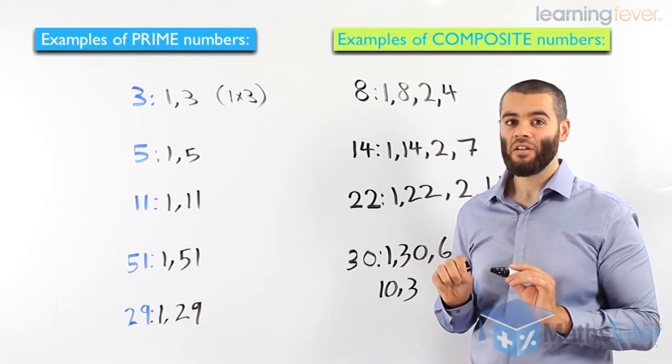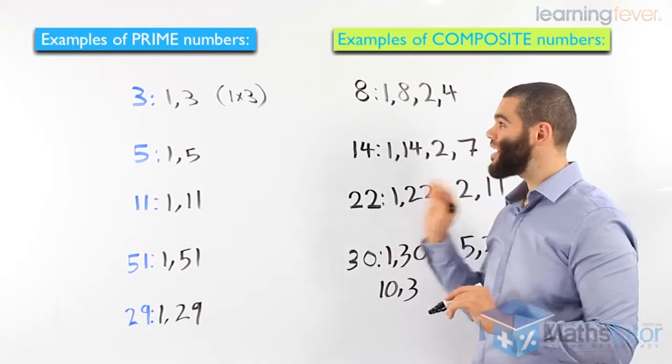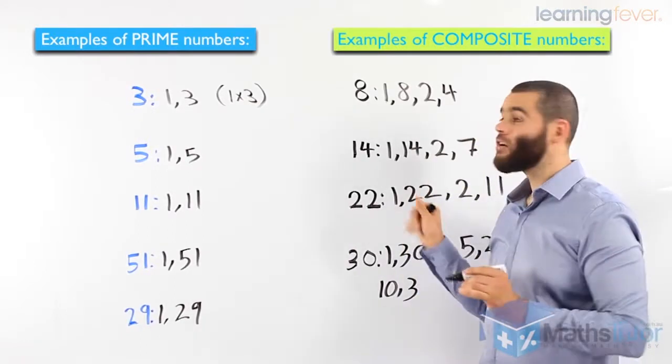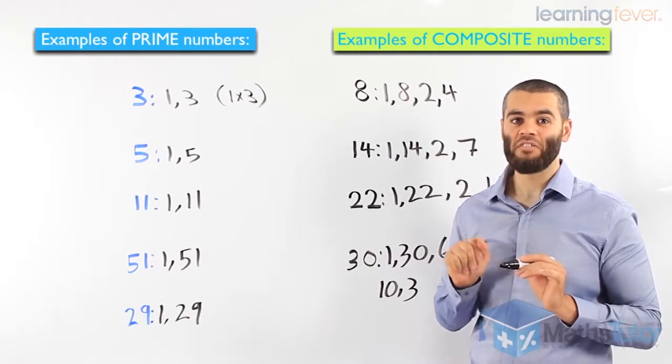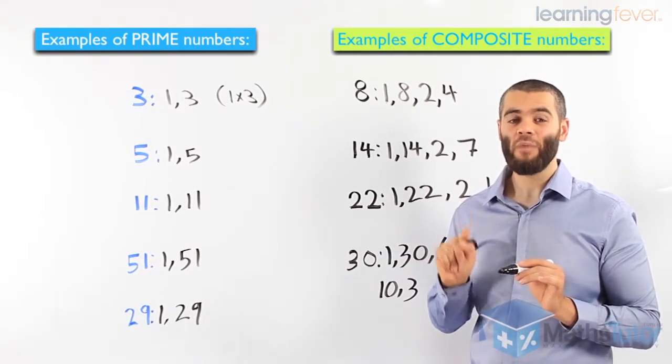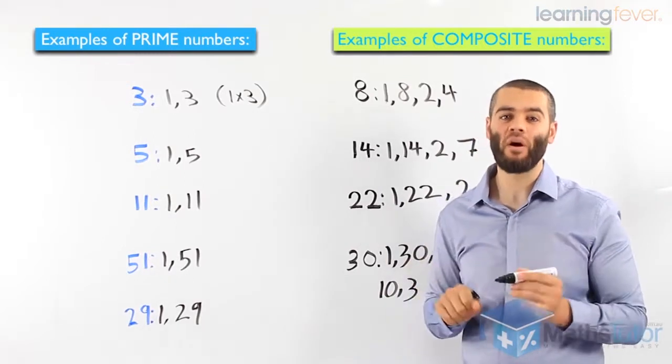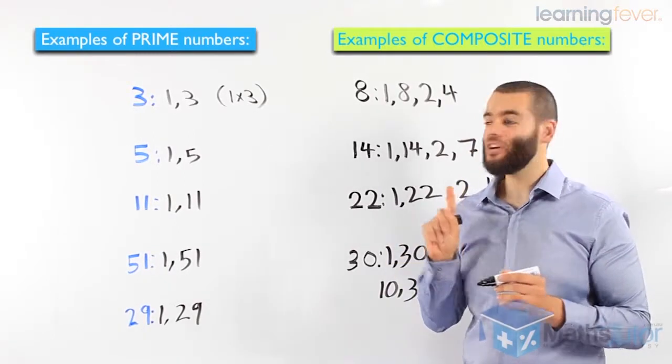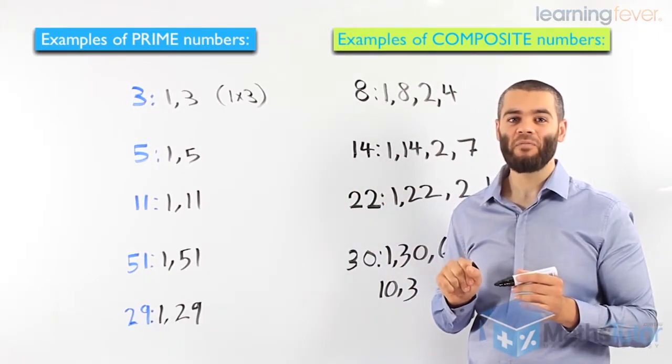Now, I'm going to give you a tip. You may get asked, what number is not a prime number, nor is it a composite number? What number do you think that is? It's the number 1. Number 1 has only one factor, which is 1. 1 times 1 makes 1. So 1 is not prime, nor is it composite. Keep that as a handy tip for you.